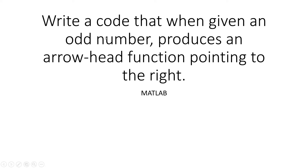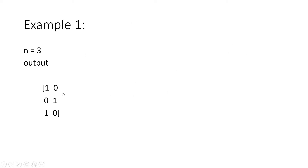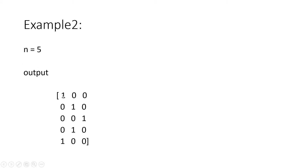Hello friends. In this video I am going to discuss a matrix-related program in MATLAB. The question is: write a code that, when given an odd number, produces an arrowhead matrix pointing to the right-hand side. For example, if the input n is 3, the output matrix shows a pattern of ones forming an arrow pointing right, with all other elements being zero. Same for n equal to 5.